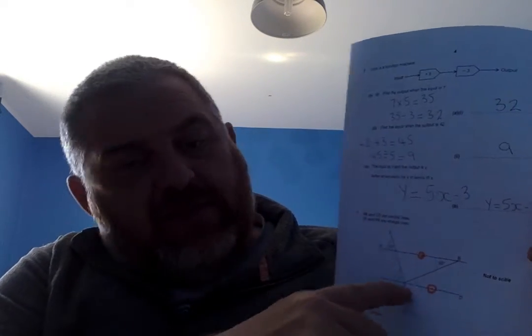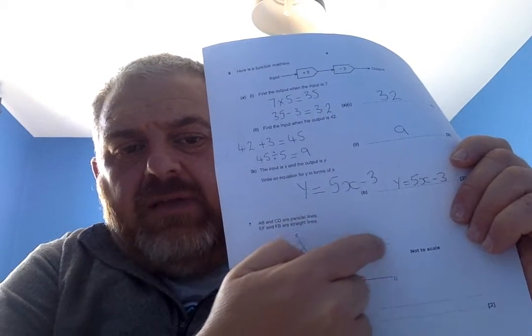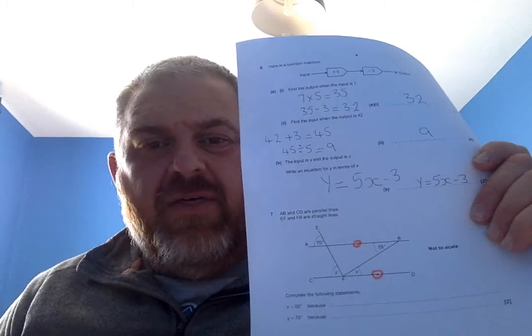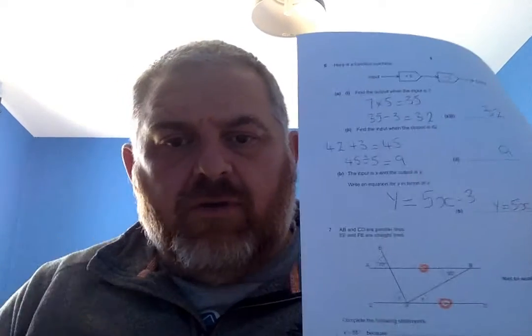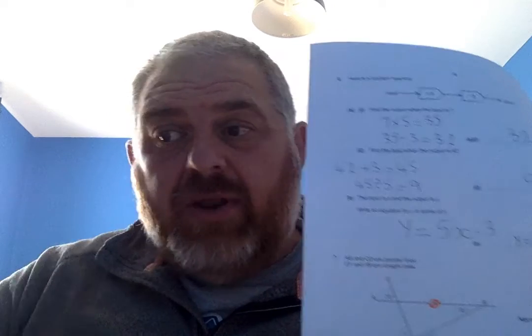And it says e, f and f, b. So, that's e, f is this line here. And f, b is this diagonal here. All it's telling us now is that they are perfectly straight. They're not curves or arcs. They're just perfectly straight lines. And we need that to solve the next bit.